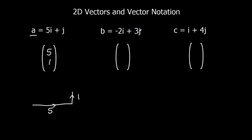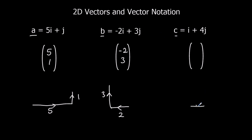Minus 2i plus 3j: so minus 2i is back 2 in the x direction, and 3j is up 3 in the y direction. So we can write that as the column vector (-2, 3). And vector C: along 1 in the x direction, up 4 in the y direction, so that's (1, 4).